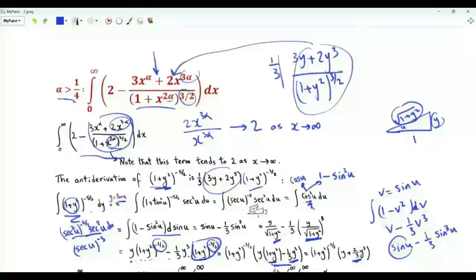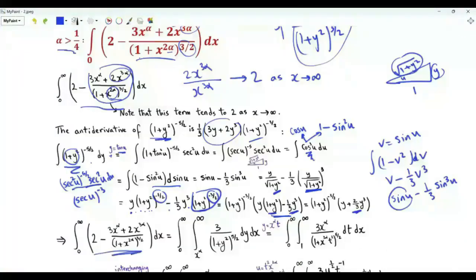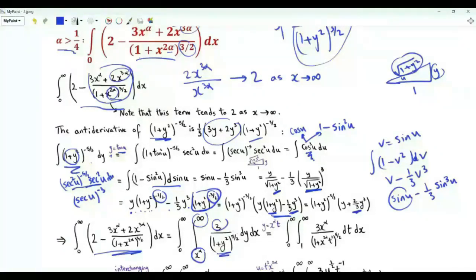Without the factor of 1/3, this is exactly the form we see in the integrand. We can write the integrand as the integral over y from x^α to infinity of 3/(1+y²)^(5/2).